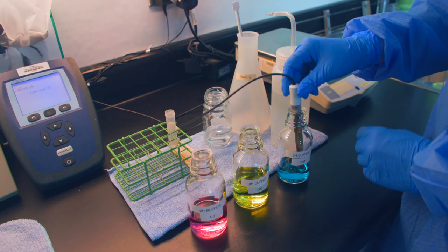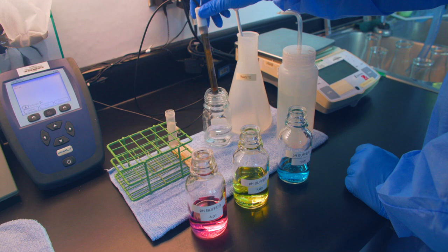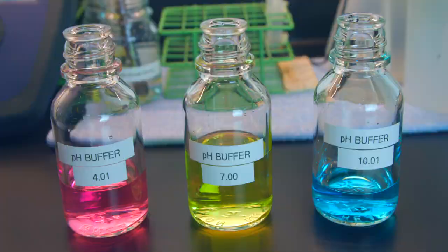Remove the probe from the solution and rinse with deionized water over a waste beaker. To verify that the pH meter is reading appropriately after calibration, take a reading of each of the pH buffers and ensure that the pH value is correct for each buffer with a tolerance of 0.02 pH units.